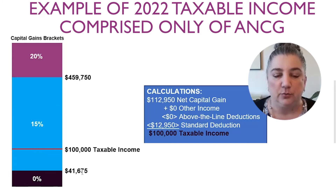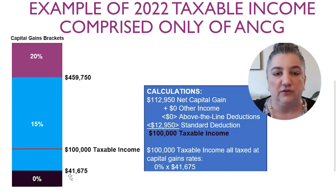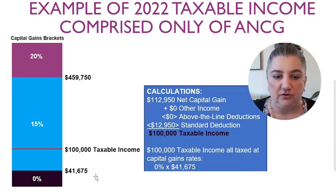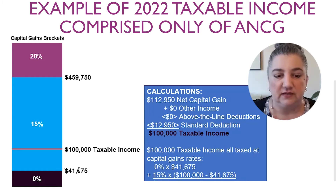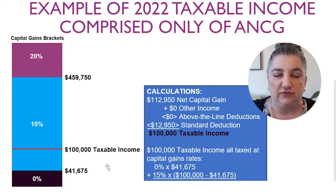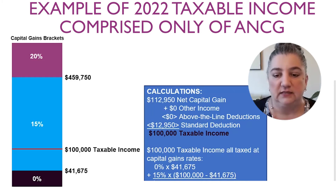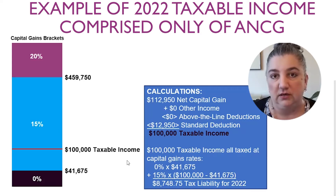Looking at the breakpoints in the 0%, 15%, and 20% brackets for tax year 2022, the $100,000 of taxable income — all comprised of adjusted net capital gain — spans the 0% and part of the 15% brackets. The breakpoint between the two brackets is $41,675. So the first $41,675 is taxed at 0%, and the remaining $58,325 is taxed at 15%, resulting in tax of $8,748.75 — the taxpayer's total tax liability for 2022.